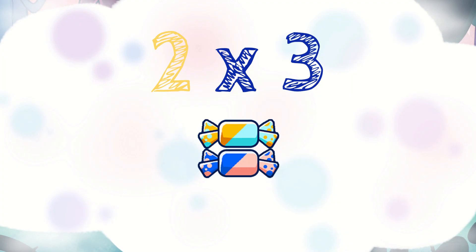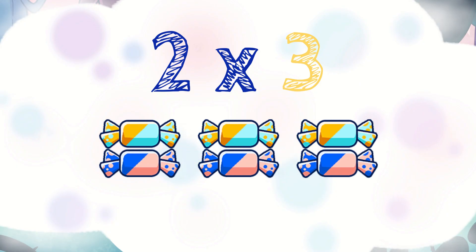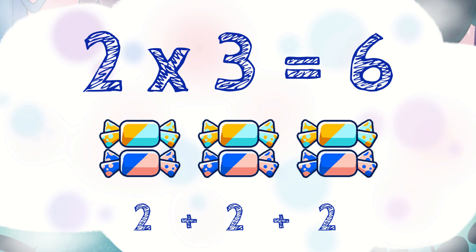Multiplication means extended addition. We use multiplication to add the same number of items several times. The first number we multiply is the number of items in each group — let's say two pieces of candy in each group. The second number is the number of groups — pretend there are three groups. So there are three groups of two pieces of candy each. That is two plus two plus two, which makes six pieces of candy. So two times three makes six.